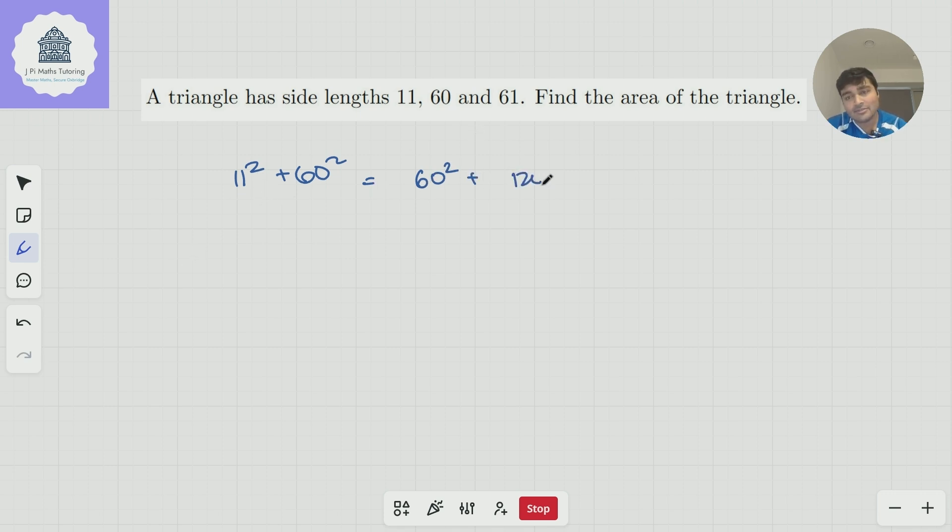It's 121, which conveniently is 60 squared plus 2 times 60 plus 1, which is 60 plus 1 all squared, which is 61 squared. And so, therefore, the area...